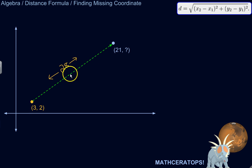I've got just a situation here, this point (3, 2), and this point (21, who knows what). But we know the distance between the two points is 28. So let's use that and see if we can't figure out what the y-coordinate would have to be for this to be true. So let us start.